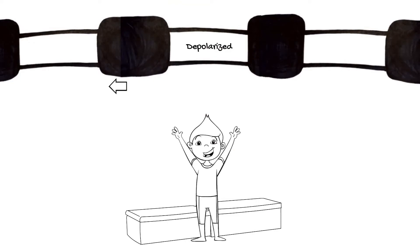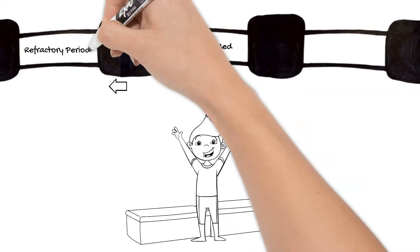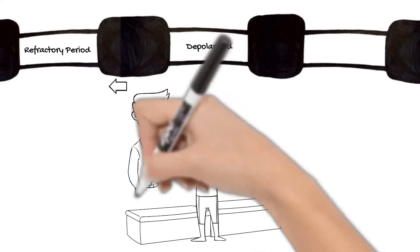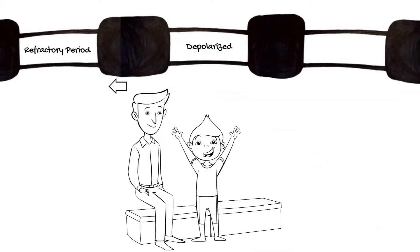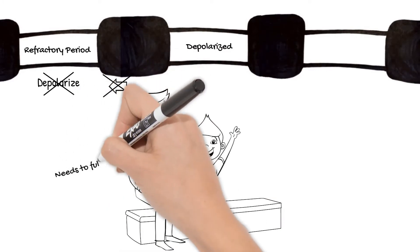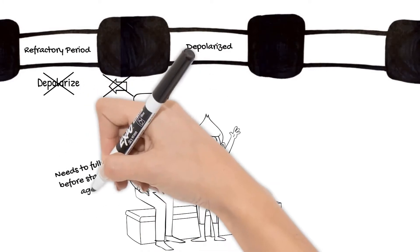This first section already depolarized, repolarized, and is in the refractory period. It's the person to your right who is in the process of sitting down. This section can't depolarize again right now. Imagine that person next to you has to fully sit before they're allowed to stand again.